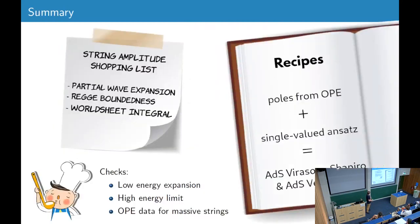Okay, so let me sum up. We used the pole structure of the AdS amplitude from the OPE and combined it with the single-valued worldsheet ansatz to fix the AdS Veneziano amplitude, and then we checked it by comparing the low-energy expansion with localization, comparing the high-energy limit with the classical computation à la Gross and Mende, and comparing OPE data for massive strings with a different classical computation.